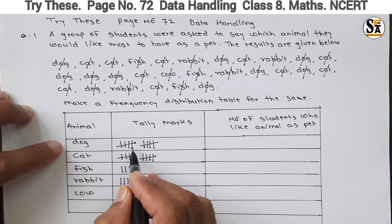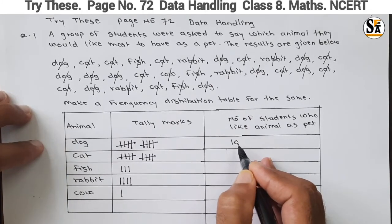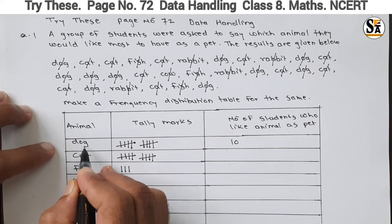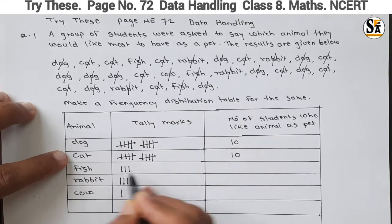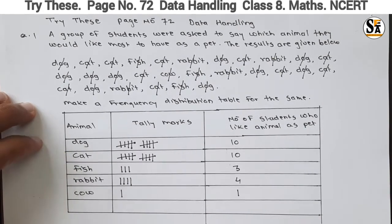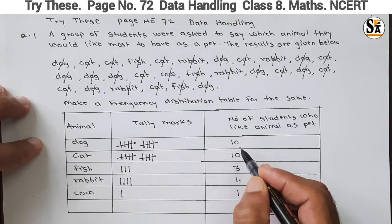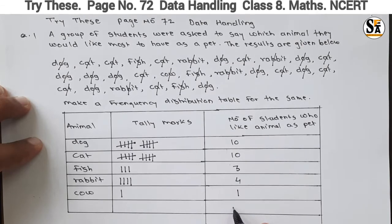Now we will count the tally marks. This is a group of five plus five — that is ten. Total number of students who like dog as a pet: ten. For cat also there are ten. For fish there are three, for rabbit there are four, and for cow there is a single student who likes cow as a pet animal.